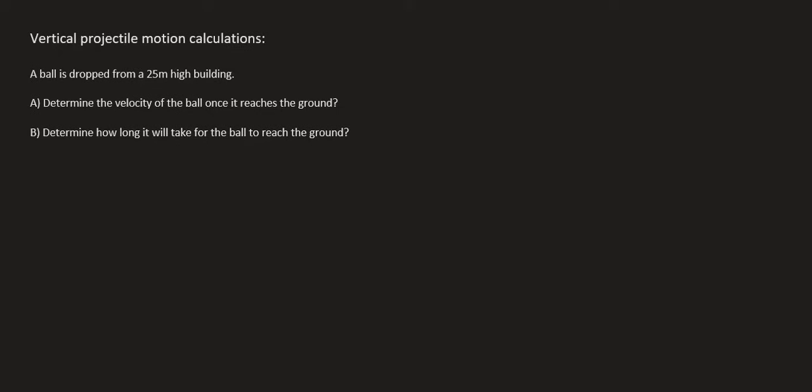In this lesson, we're going to look at a few more vertical projectile motion calculations. Here we have a ball that is dropped from a 25 meter high building. The first question says, determine the velocity of the ball once it reaches the ground.